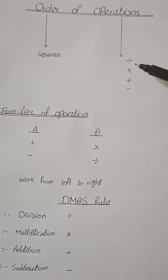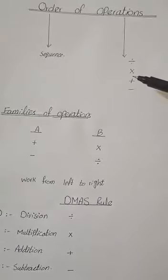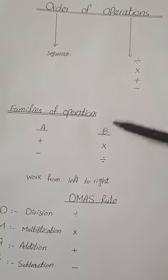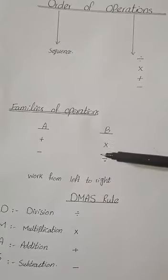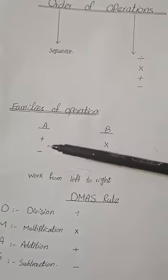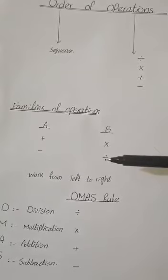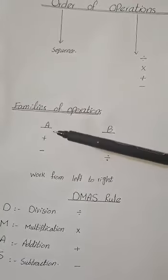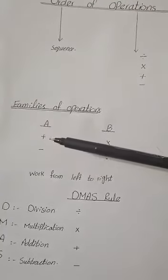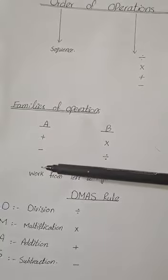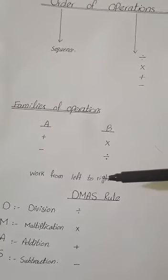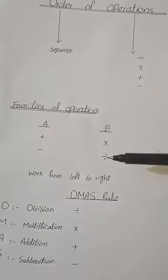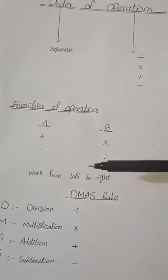If we have these operations in our question, then which operation do we do first? We divide these four operations into two families. First family: plus and minus. Second family: multiply and divide. The purpose of making these families is to help us solve the question. If we have operations from only one family in our question, then we work from left to right.